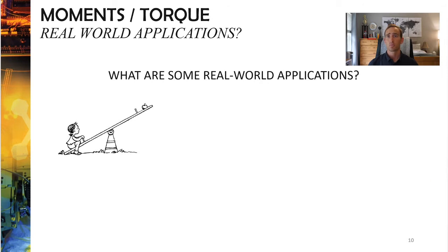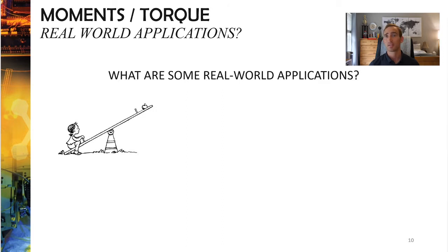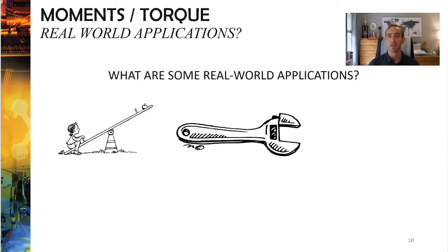Some real world applications include a seesaw on a playground — a perfect example of moments. You've got forces on either side of a pivot point, which is right in the middle of the seesaw. Another example is a wrench: the longer you make the wrench arm, the easier it is to turn the bolt. That's a great example of applying a linear force into a rotational force via a tool.